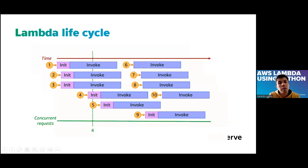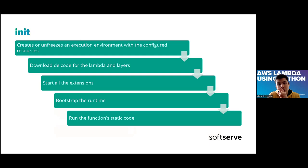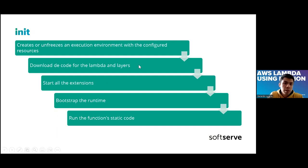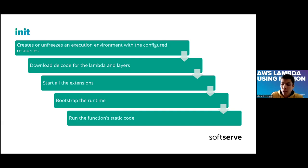If you are thinking of using AWS Lambda, you need to consider that every time a new request arrives, this init time is spent — mostly like one second or less, depending on the layers and the size of your code. More code, more layers, and more extensions means your Lambda will be slower when receiving a new request.